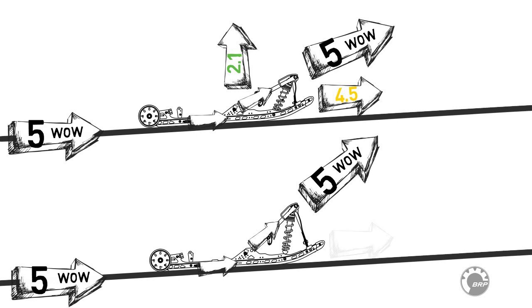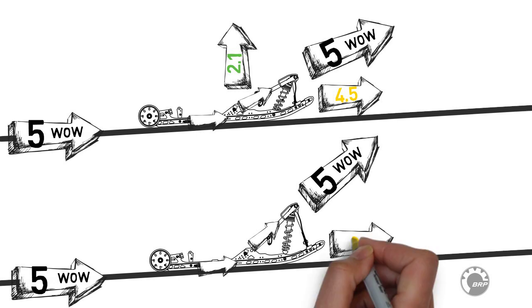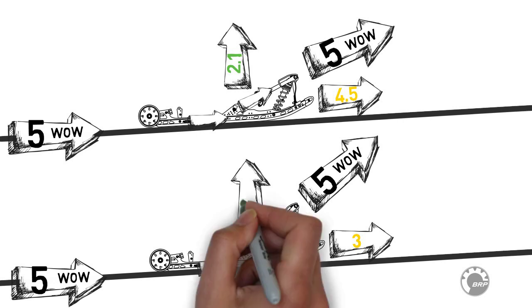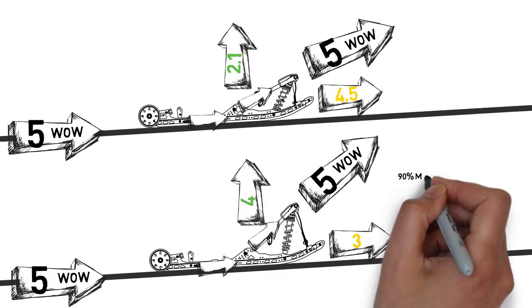In the second configuration, with the much steeper angle on the front arm, only 3 WOWs are accelerating the snowmobile, but now 4 WOWs are lifting the chassis and pushing the track into the snow.